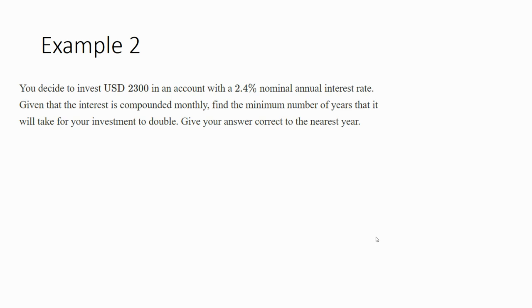So we decide to invest 2300 US dollars in an account with a 2.4% annual interest rate. But we're given that the interest is compounded monthly. Find the minimum number of years that it would take for our investment to double. So to go from 2300 to 4600. So that's the first thing I'm going to do is set up our equation with the 2300 deposit. One plus the interest rate divided by 12 because it's compounded monthly to the power of 12N. And we don't know what N is because it says find the minimum number of years. That's what we're trying to find. And I set it equal to 4600 because it says how long will it take our investment to double? So times 2.